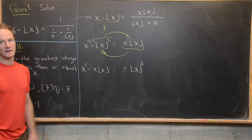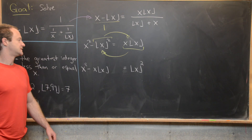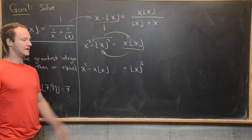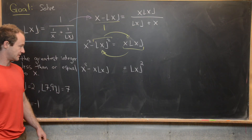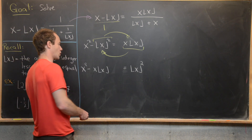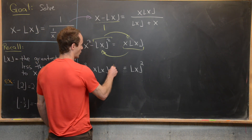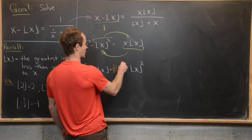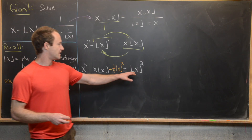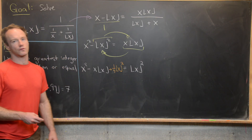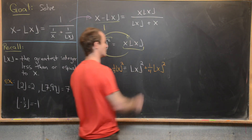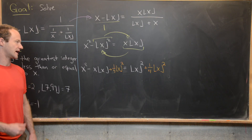Now we complete the square on the left-hand side. Using the standard strategy, we take half the coefficient of the middle term — the coefficient is minus 1, half of that is minus one-half, squared gives one-quarter — so we add one-quarter·floor(x) squared to both sides. That makes the left-hand side a perfect square binomial, and since it's a like term on the right, we add it there too.